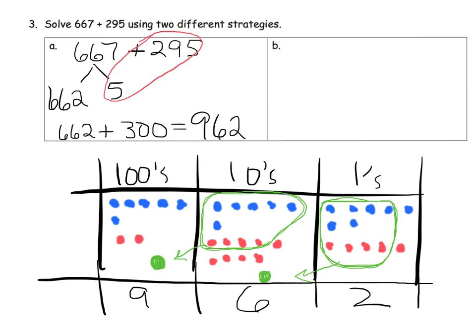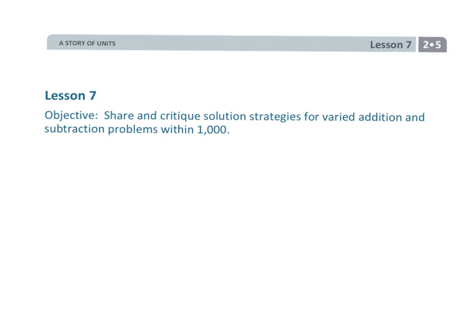So I'm going to put up here 667 plus 295 equals 962, and we did that using the place value chart. And that wraps up grade 2 module 5 lesson 7, where students are using a variety of solution strategies for addition and subtraction.